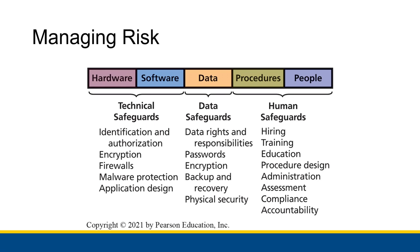What we have here is the figure that shows all the different components of an information system — the hardware, software, data, procedures, and people — and all the different safeguards that an organization has to take to manage risk across each of those components. Over the next two videos, we're going to talk about the technical safeguards, the data safeguards, and the human safeguards in order to make sure that all the hardware, software, data, procedures, and people are all safe. We'll start in the next video with technical and data safeguards.